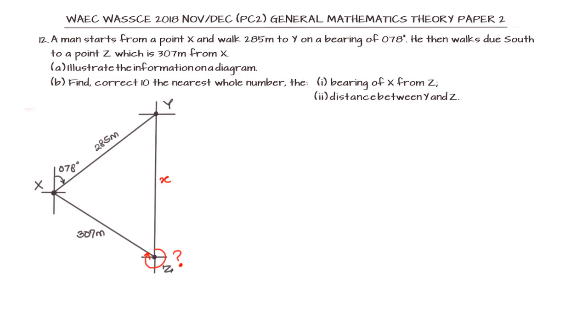For the first one, the bearing of X from Z, if we look at the diagram at point X and point Y, we can notice an alternate angle. At point Y, this angle is also going to be 78 degrees. The reason is that it is alternate to the angle coming from X from the northern side. So angle XYZ is 78 degrees, alternate to the bearing of Y from X.